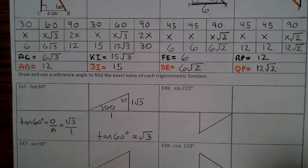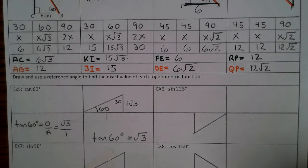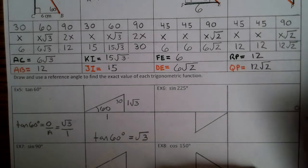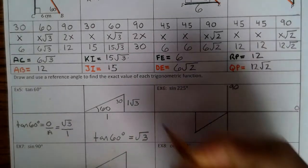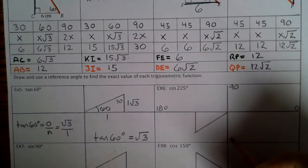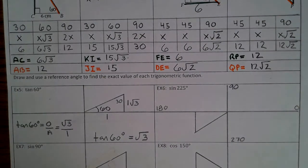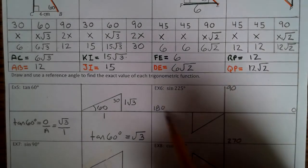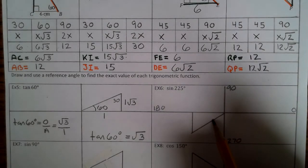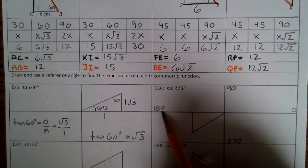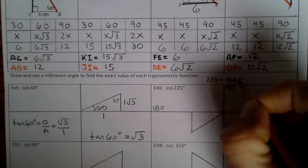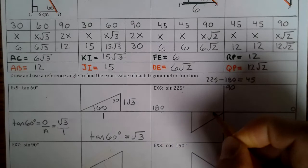Now let's look at example 6: sine of 225 degrees. We know this is 0, 90, 180, 270. Since 225 lies between 180 and 270, we need to find how much you add to 180 to get 225. Take 225 minus 180, which equals 45 degrees. So the reference angle is 45 degrees, because 180 plus 45 is 225.